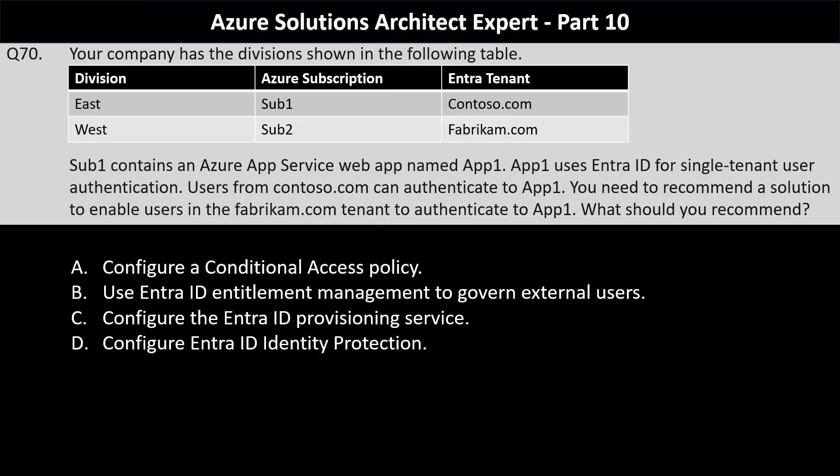You should make use of Entra ID entitlement management to govern external users. This feature allows you to manage access for external users, including those from different Entra ID tenants. You can invite users from fabricum.com to access App One, which effectively enables cross-tenant authentication.